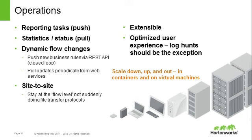Today NYFI supports essentially both a push and pull model for a lot of the really critical information. We can push, for example, provenance data and statistics out through our reporting tasks API. This would be somebody writing code that then runs in NYFI to look at this information and then push it out to an external service, like Atlas, for example.